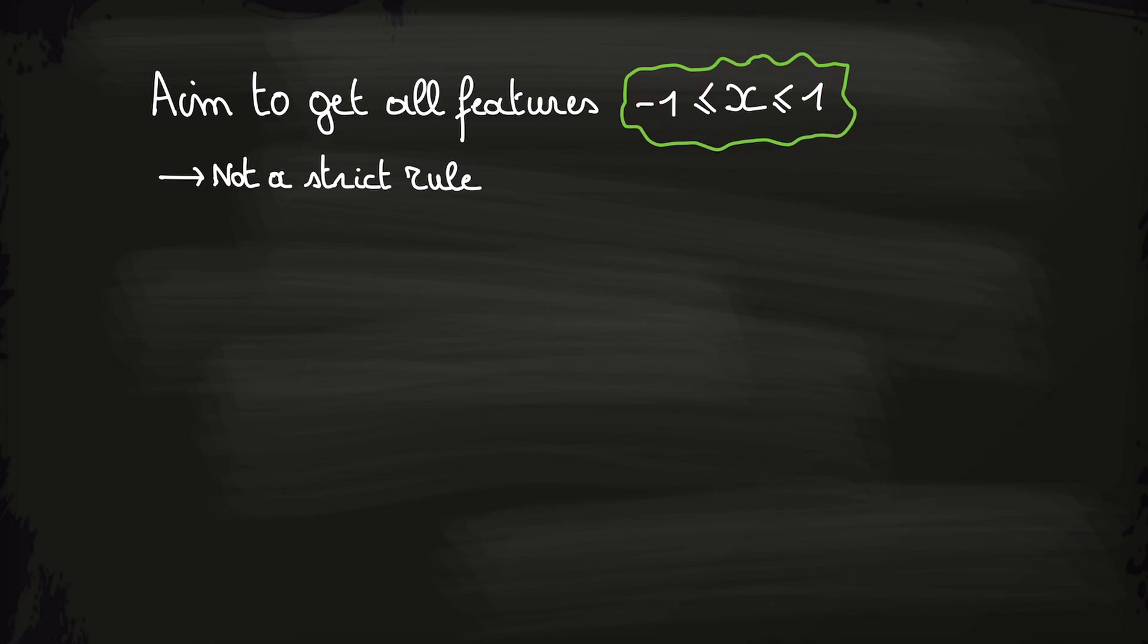For example, if we have a feature x1 that is between 0 and 3, this is fine. If we have a feature x2 that is between minus 3 and 1, that is fine. However, if we have a feature x3 that is between 0 and 50, this is not fine and you should rescale this feature. Also, if you have a feature x4 that is between minus 0.004 and 0.3, this is not fine. You should also rescale this feature. So as long as the features have a range that is close enough to each other, it's fine. You shouldn't worry if your features are not exactly between minus 1 and 1.